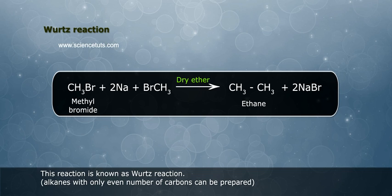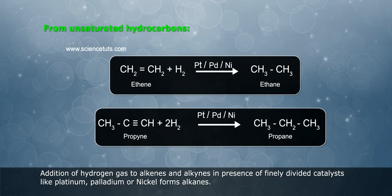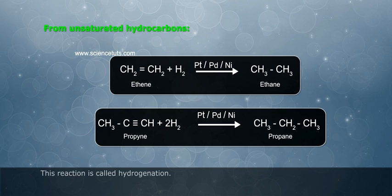Alkanes with only even number of carbons can be prepared from unsaturated hydrocarbons. Addition of hydrogen gas to alkenes and alkynes in presence of finely divided catalysts like platinum, palladium, or nickel forms alkanes. This reaction is called hydrogenation.